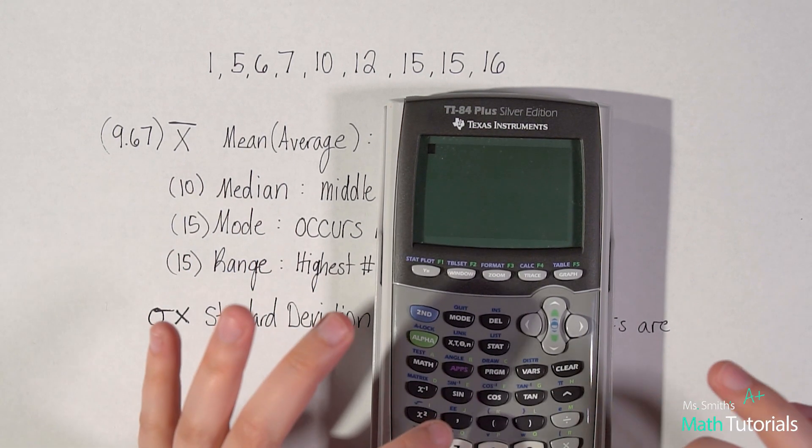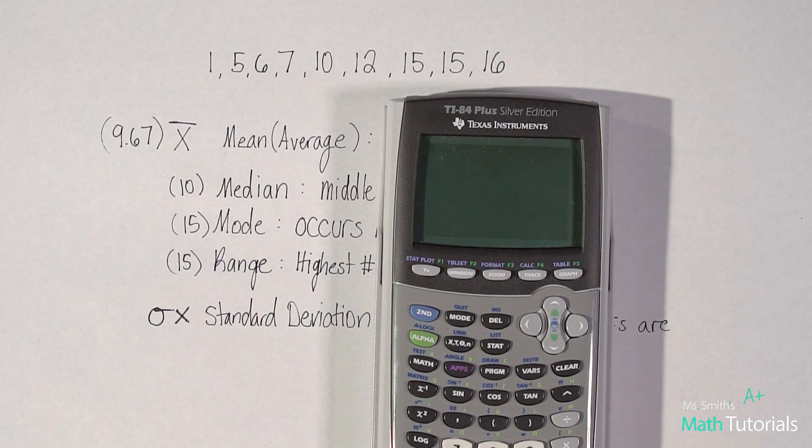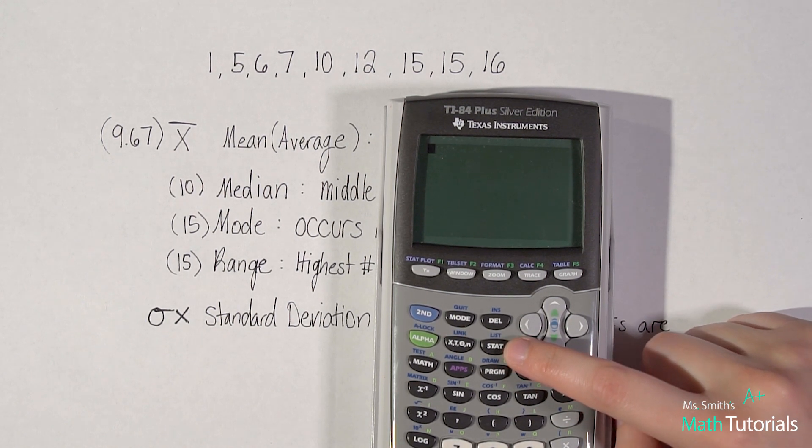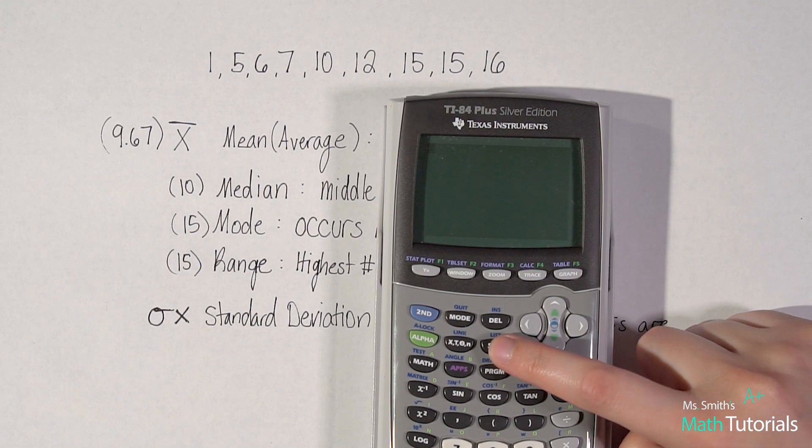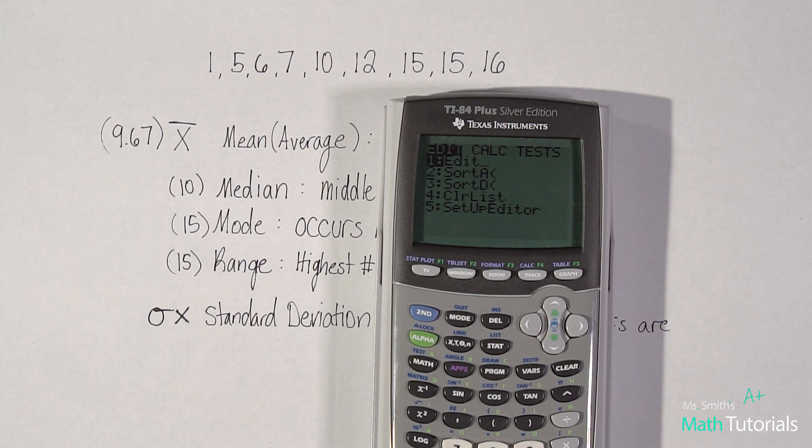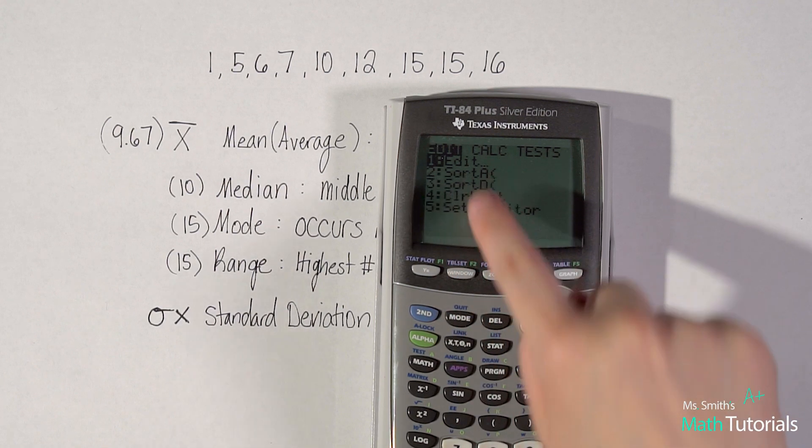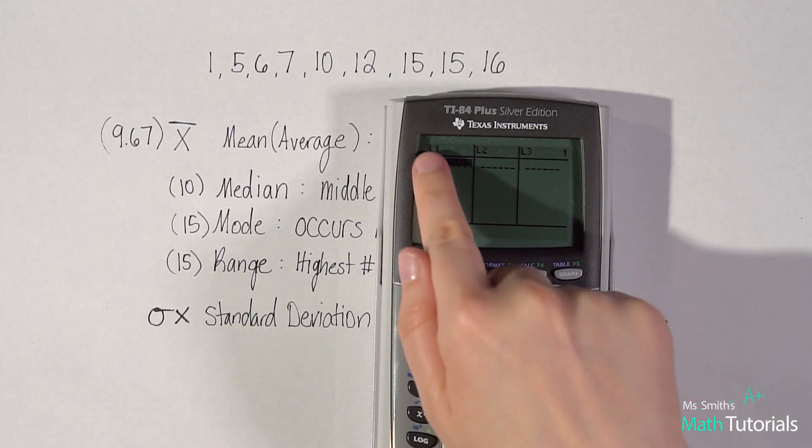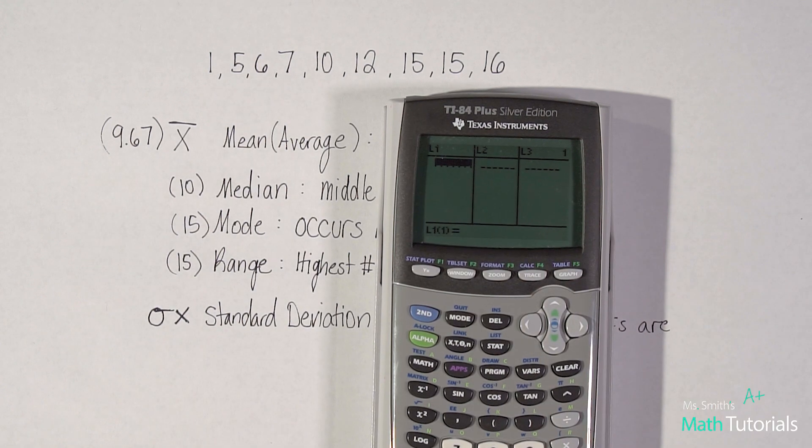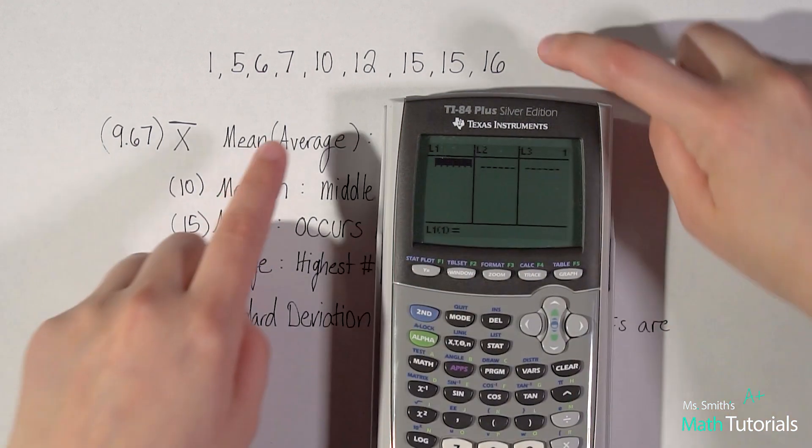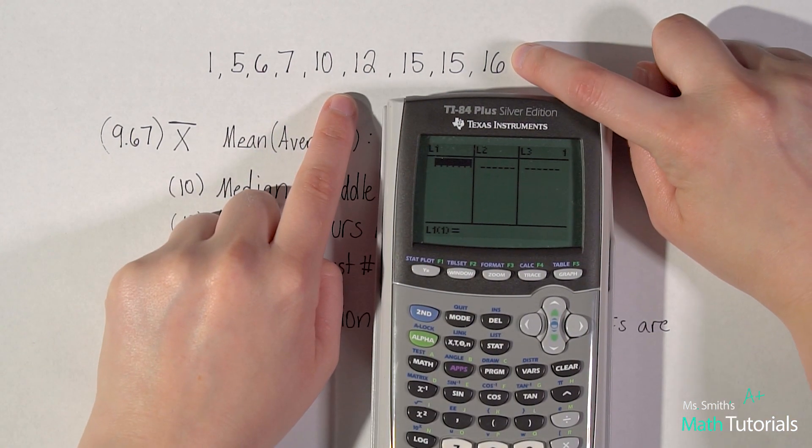Okay, so we need to hit this stat button. And it kind of makes sense. We're talking about statistics. So we're going to use the stat button. So hit the stat button. We'll be pretty familiar with all these options by the end of the unit. So we want to edit our list. So we're going to hit you can either hit one or just hit enter to edit. And you'll see we've got list one, list two, and list three. For right now, we're just for this problem, we're just going to be using list one. So I want to type in all my values up here. Okay, so I'm gonna do them one at a time.